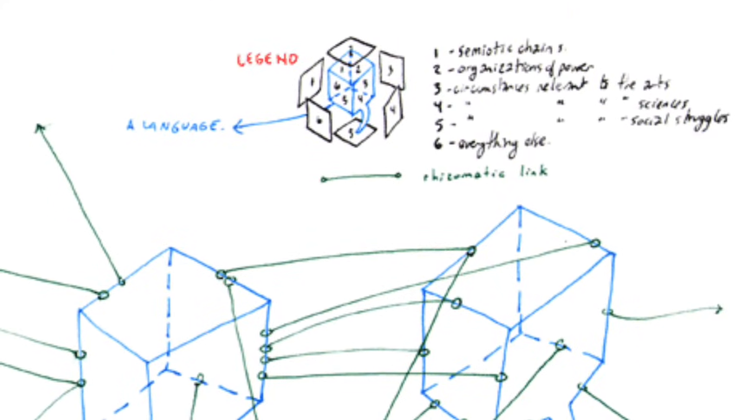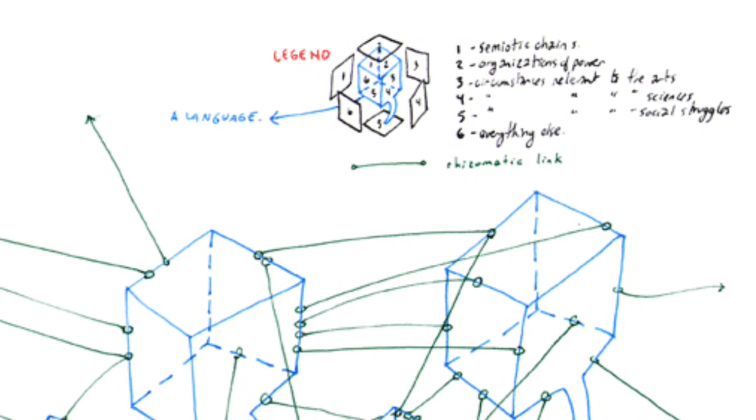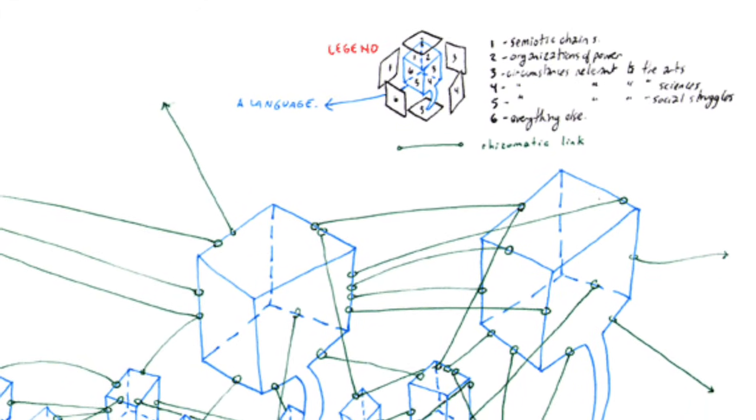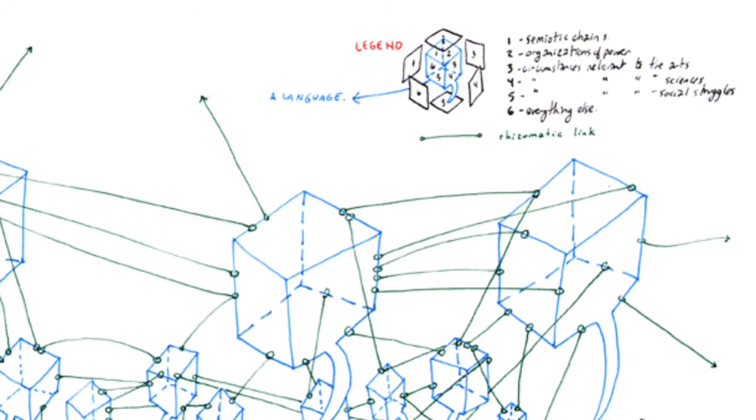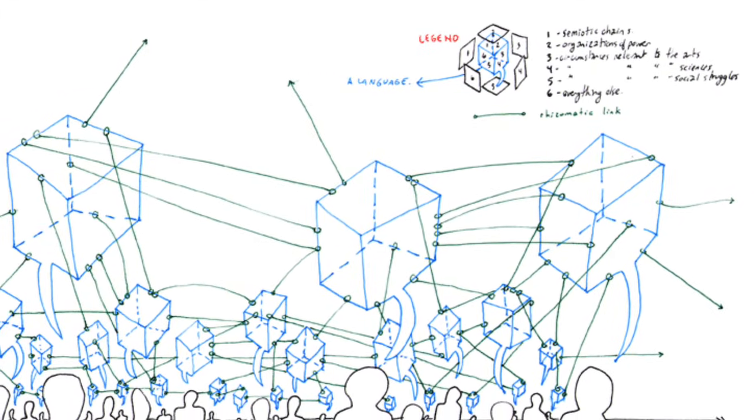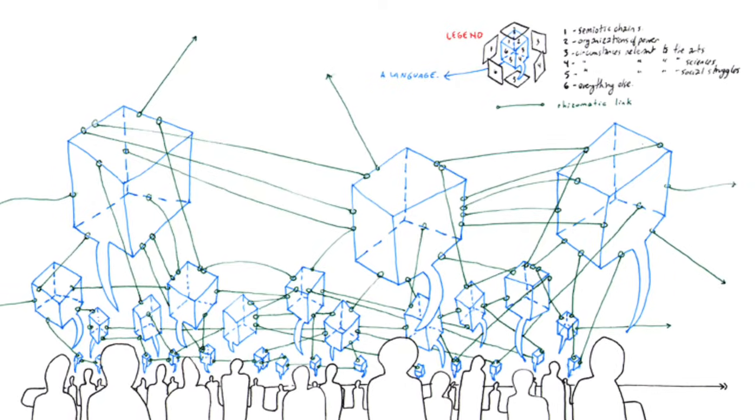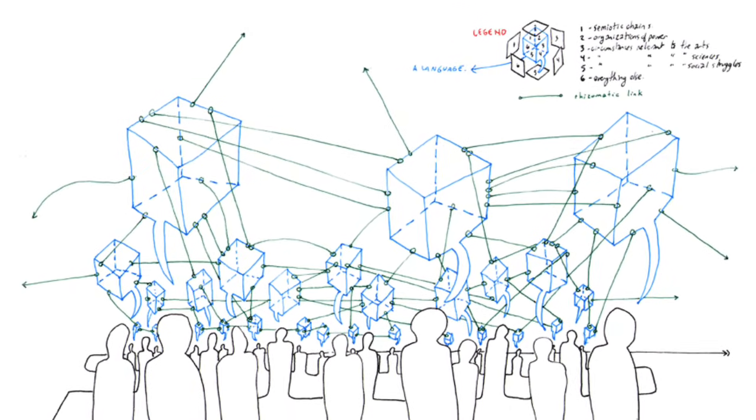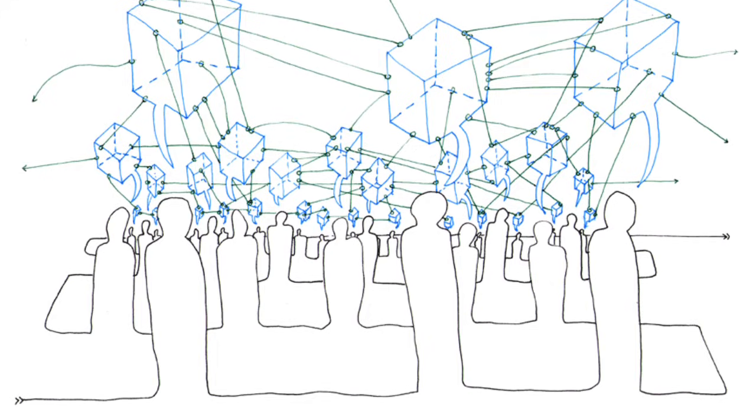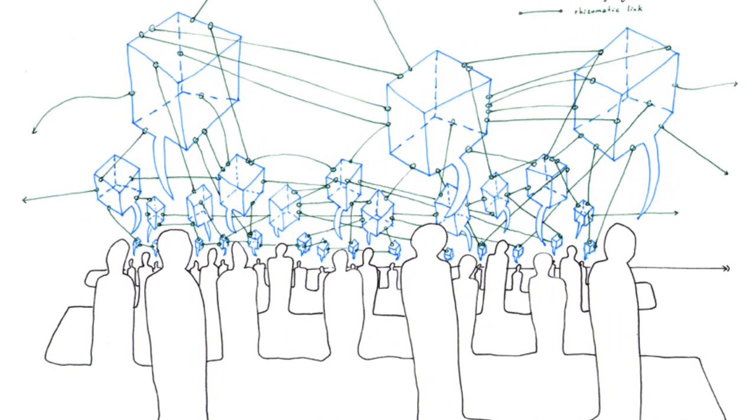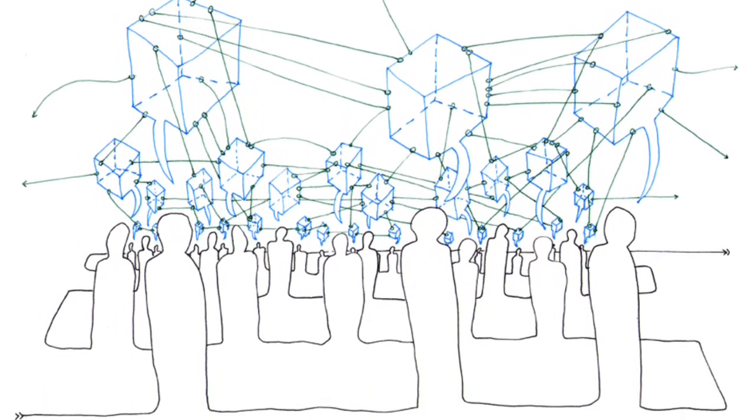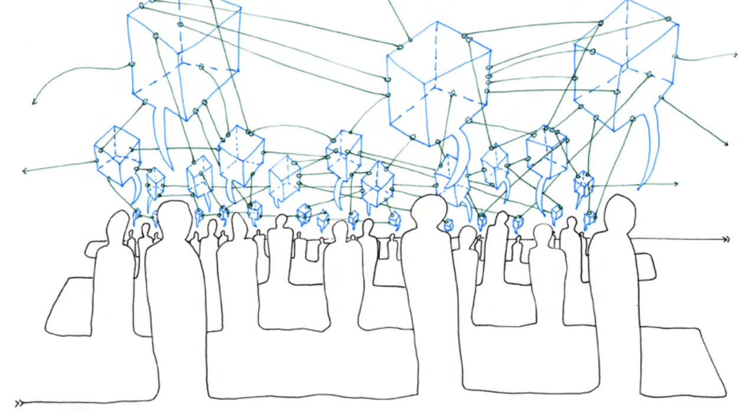1 and 2. Principles of Connection and Heterogeneity. Any point of a rhizome can be connected to any other, and must be. This is very different from a tree or root, which plots a point, fixes an order. The linguistic tree on the Chomsky model still begins at a point S and proceeds by dichotomy. On the contrary, not every trait in a rhizome is necessarily linked to a linguistic feature. Semiotic chains of every nature are connected to very diverse modes of coding. Biological, political, economic, etc. That bring into play not only different regimes of signs, but also states of things of differing status.